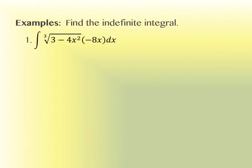Let me show you an actual example. This looks like a product — I've got a piece with a cube root and a piece outside of that multiplying by negative 8x. If it looks like a product, you may have u substitution. What you want to do is identify the piece that looks like it's inside of something else. It's the 3 minus 4x squared — it's inside or underneath a radical. So we let u equal 3 minus 4x squared.